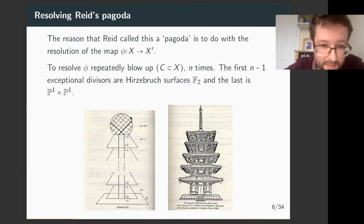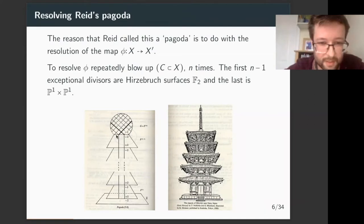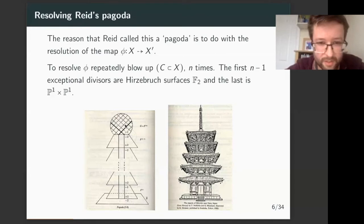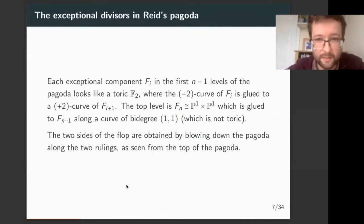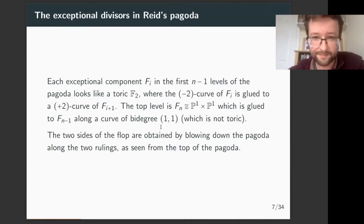The P^1 × P^1 at the top is glued to the Hirzebruch surface below it along a curve of self-intersection two — a curve of bi-degree (1,1). This pagoda has two rulings, which you can see from the top. Both sides of this flop are given by contracting this pagoda along one of each of these two rulings.